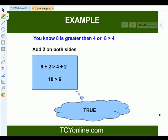Now similarly, let's look at this example. We are aware that 8 is greater than 4. So if we add 2 on both sides, that makes 10 greater than 6, and we all know that is true. So remember, when we add something on both sides of inequality, the result remains unchanged.